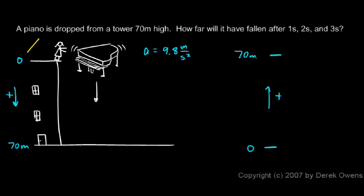This one is a little bit easier, the way I've set it up here. And the reason it's a little easier this way is because everything is positive. My 70 meters is positive. The acceleration is positive. And positive numbers are just a little bit easier to work with.